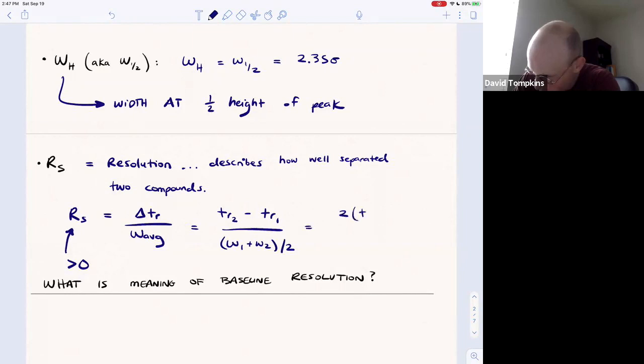And once again, you'll see one more way that this is rearranged where it's two times TR2 minus TR1, just bringing that one half up top and then over the sum of the widths.